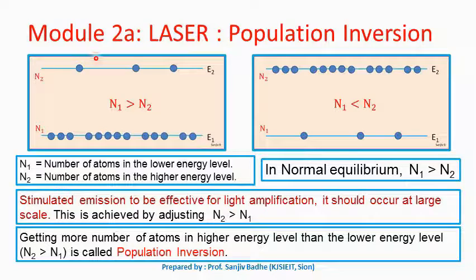But we have seen in the last slide that light amplification can progress only if there are sufficient number of atoms available in the excited energy state E2. If there are no atoms available in the excited state, then the light amplification will stop.